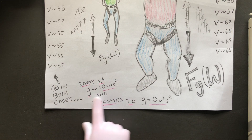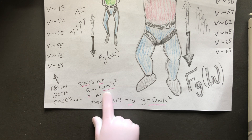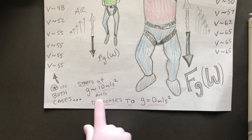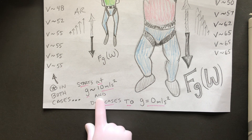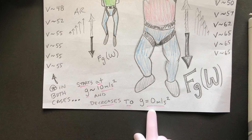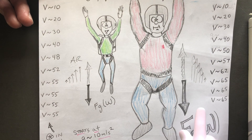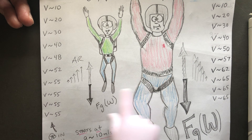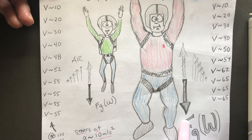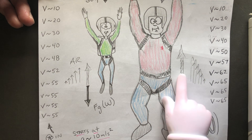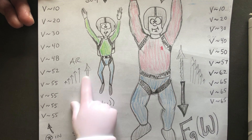In both cases, they would both start when they jump out of the airplane at 10 meters per second squared, but they both eventually decrease their rate of acceleration to zero meters per second — that's when they reach terminal velocity. The bigger guy just reaches it a little bit later because he has to encounter a little bit more air resistance than the little guy.